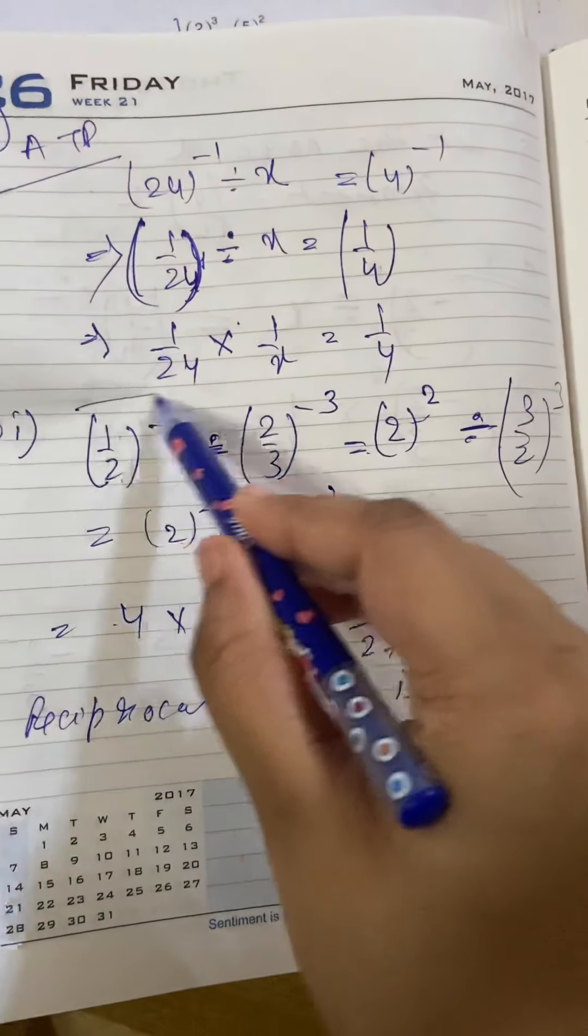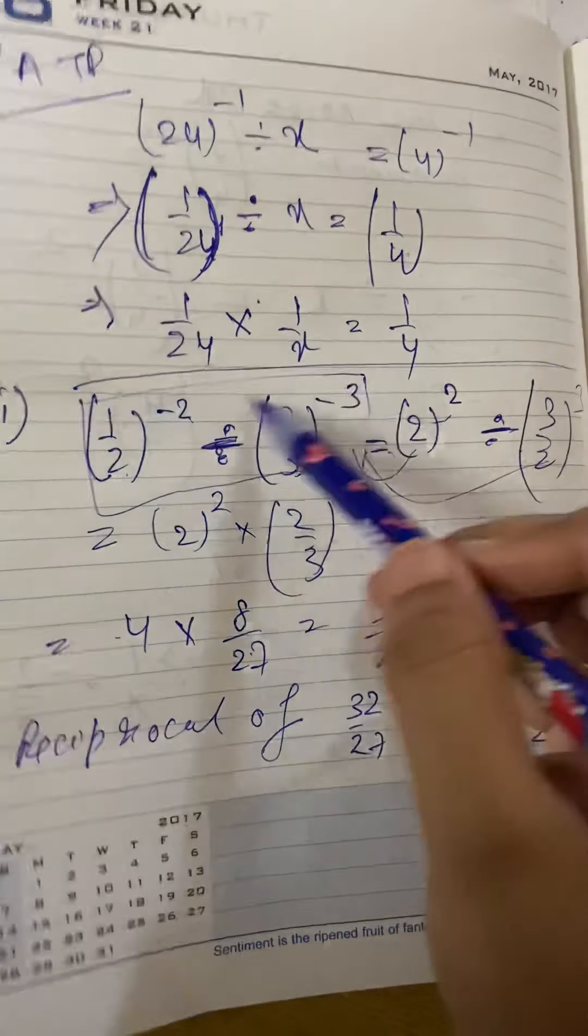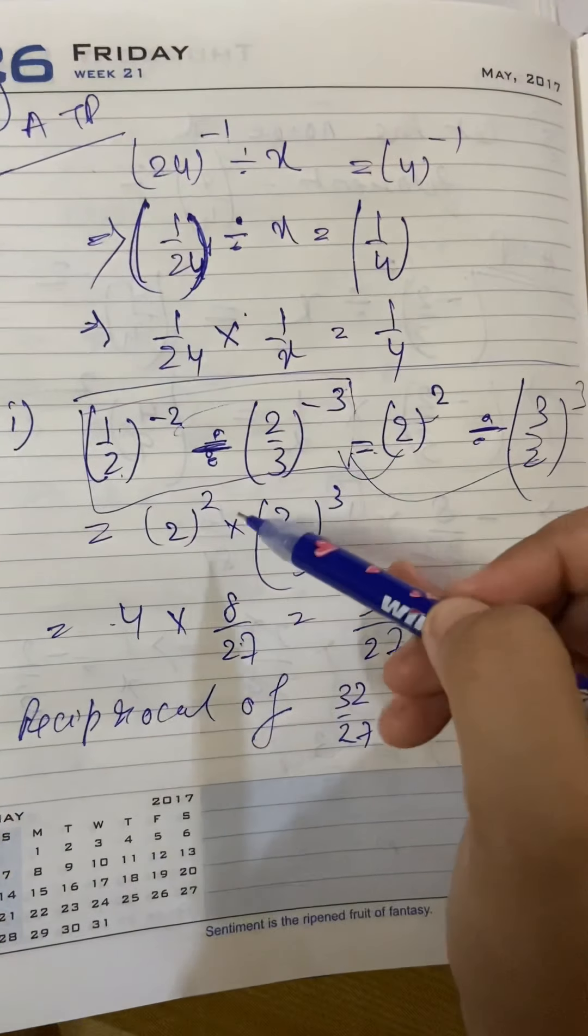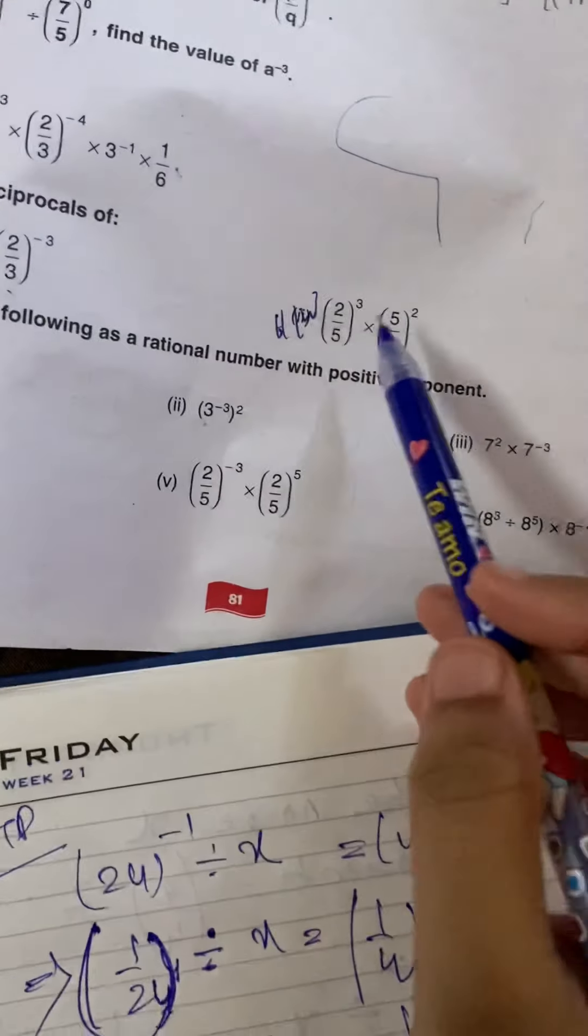To, yye sab chiz ko baat dhyan mein rakhna hai ki jab minus sign hai hai toh usko pahalye positive kar dhe power mein. Phir, division ke badale into or again reciprocal. Likewise, you will complete the second question.